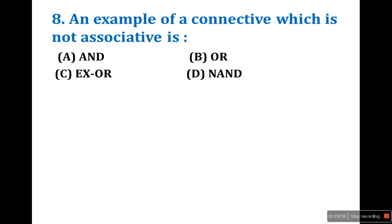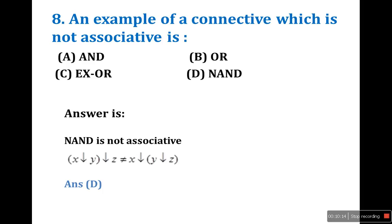Eighth question: an example of a connective which is not associative. We know AND, OR, and XOR are associative. Only NAND is not associative. A NAND B is not equal to B NAND A in general, unlike OR or AND. So the answer is D — NAND is not associative.